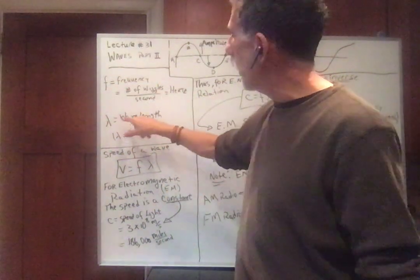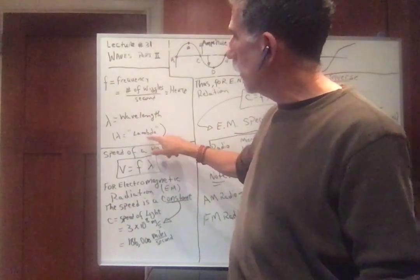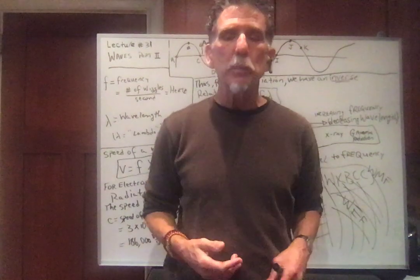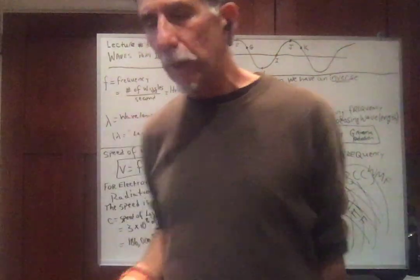And the other thing to characterize the wave is going to be called the wavelength. We use the Greek symbol lambda. Wavelength could be meters, could be kilometers, could be micrometers, nanometers, centimeters, could be any kind of length.